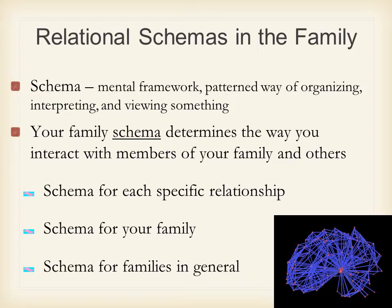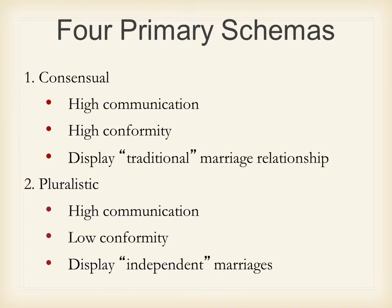These are the different ways to understand schemas. Now let's look at four different schemas of the family. The first two are generally considered to work out pretty well. The first is a consensual family schema, which involves high communication — sometimes called high conversation — and high conformity. They display traditional marriage relationships. High communication means these families talk a lot with each other, and not just about surface topics — they go into personal topics.